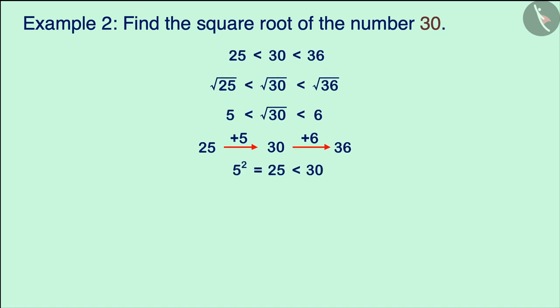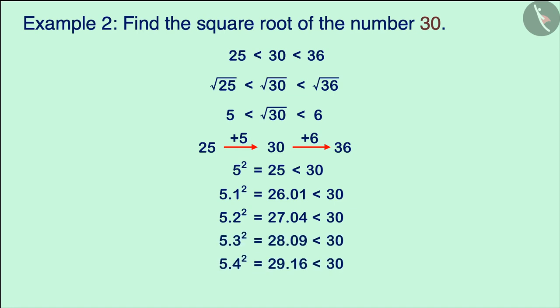Moving further, let us find the squares of 5.1, 5.2, 5.3, 5.4 and 5.5. And let us see square root of 30 is approximately equal to which number?